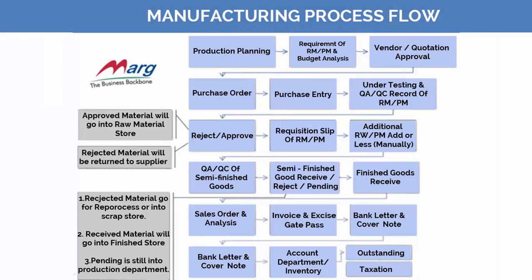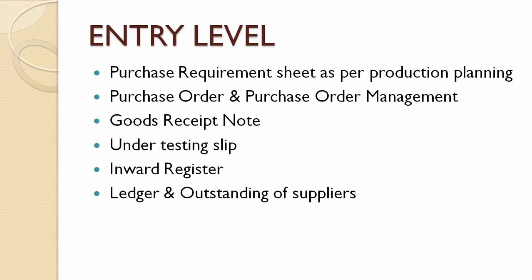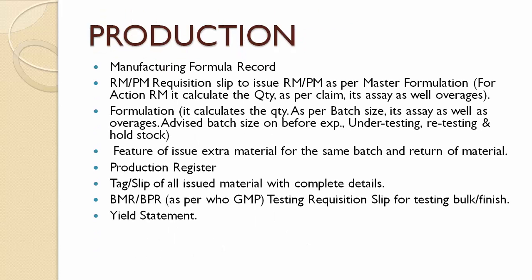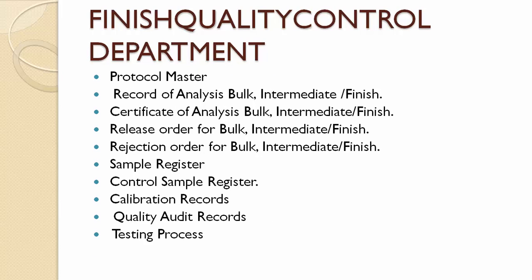Now let's understand what is required at each process level. At entry level we need: purchase requirement sheet as per production planning, purchase order and purchase order management, goods receipt note, under-testing slip, inward register, ledger, and outstanding of supplier orders. In the quality control department: testing requisition slip, requisition slip certificate, rejection list, rejection order, and approved and rejection list. The production department has its own set of requirements.